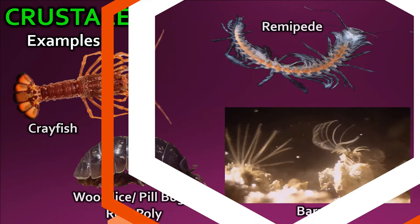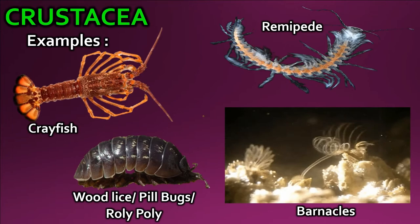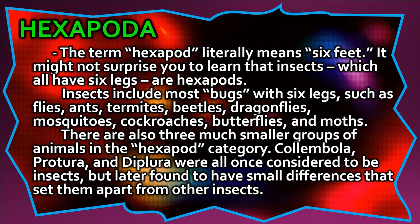The term hexapod literally means 'six feet.' Insects, which all have six legs, are hexapods. Insects include most bugs with six legs, such as flies, ants, termites, beetles, dragonflies, mosquitoes, cockroaches, butterflies, and moths. There are also three much smaller groups in the hexapod category — Collembola, Protura, and Diplura — which were all once considered insects but were later found to have small differences that set them apart.